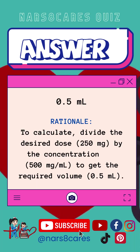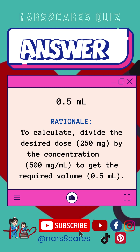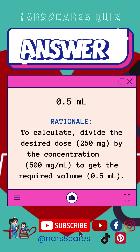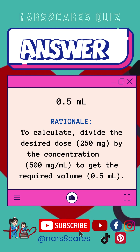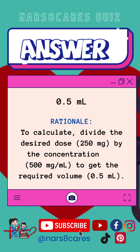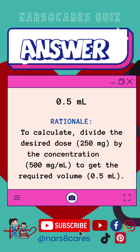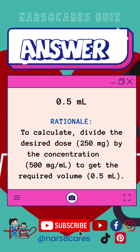Answer: 0.5 ml. Solution: To calculate, divide the desired dose, which is 250 mg, by the drug on hand concentration of 500 mg per ml to get the required volume — that is 0.5 ml.